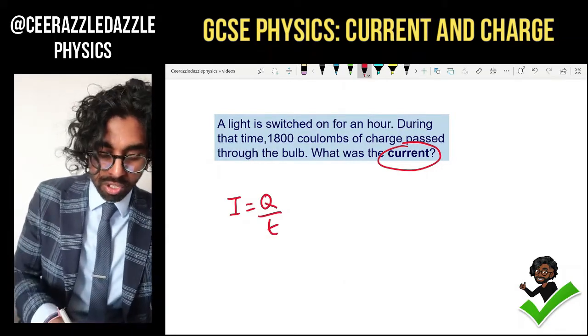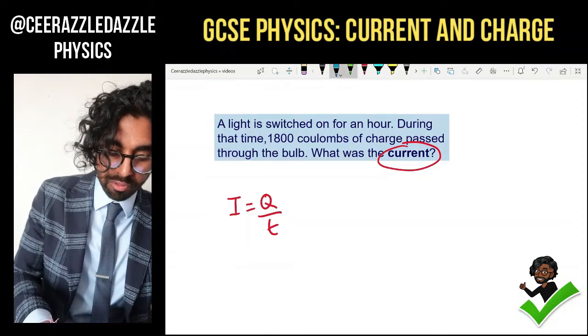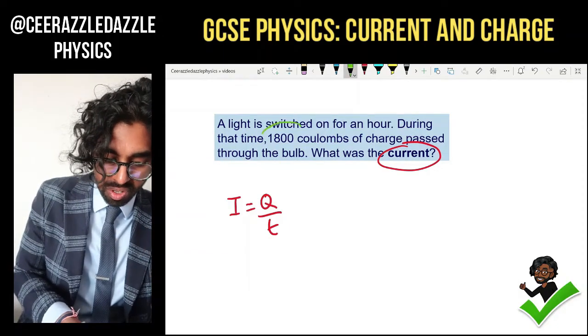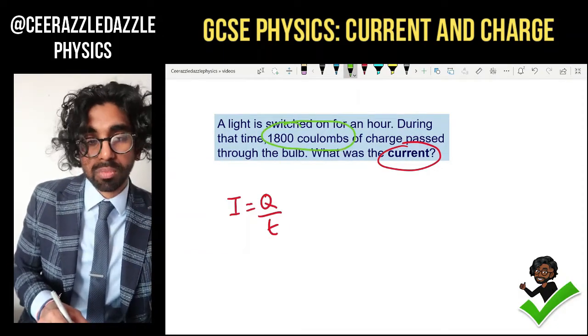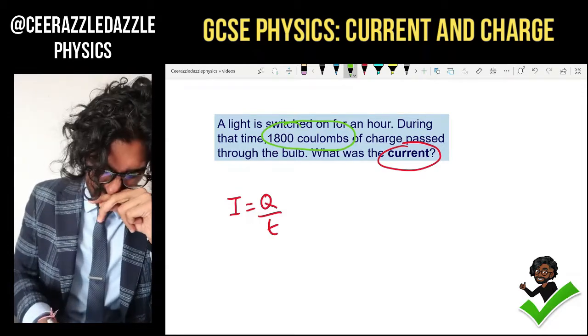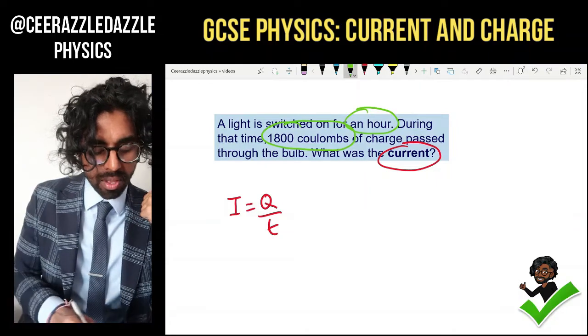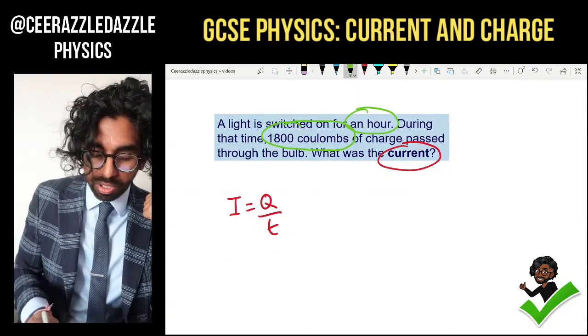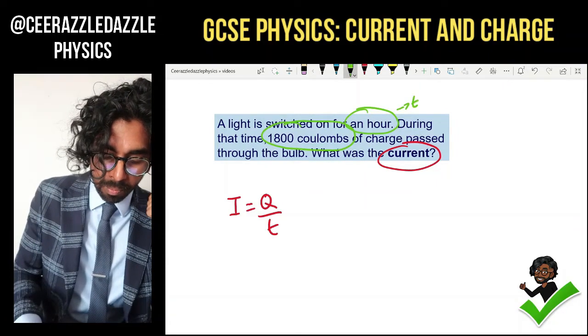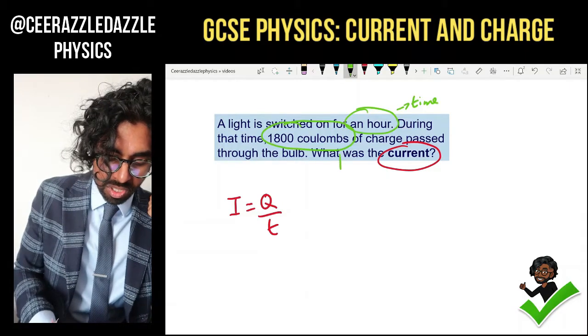Now what is the charge? You can see that in our formula. No, not in our formula, in the question. 1,800 coulombs is going to be the charge. The time, we can see, it's going to be an hour. Everyone happy with that? A light is switched on for an hour, so that is the time. And this one is the charge.